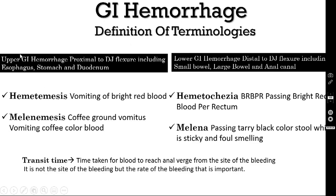What do you mean by upper GI hemorrhage? It is the hemorrhage proximal to the DJ flexure, that includes the esophagus, stomach and duodenum. Two terminologies you should know in upper GI hemorrhage: hematemesis and melanemesis. Hematemesis is vomiting out bright red blood, while melanemesis is vomiting out coffee ground vomitus or slightly altered color vomitus.